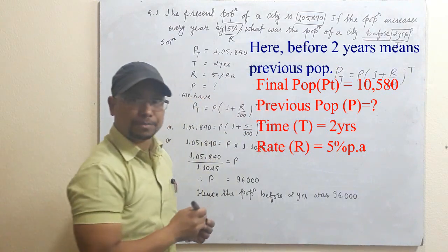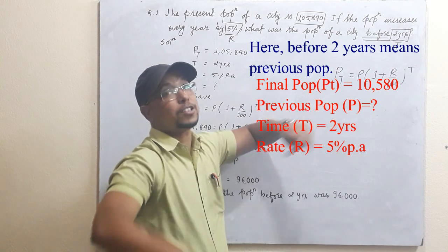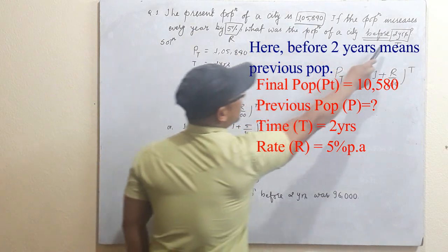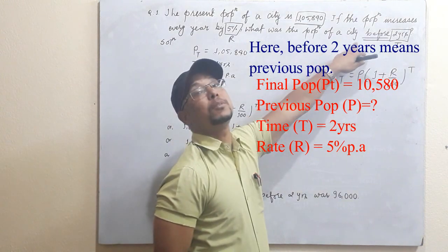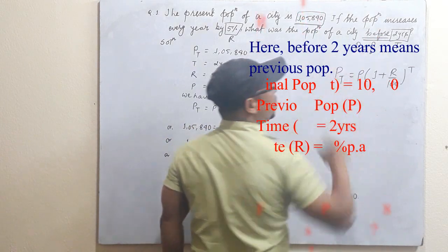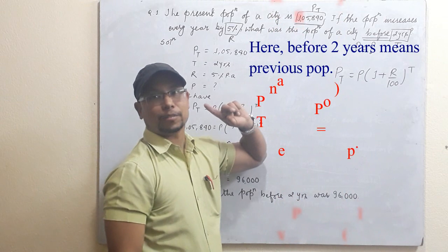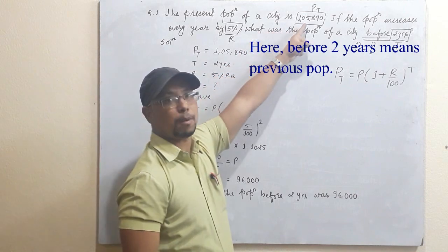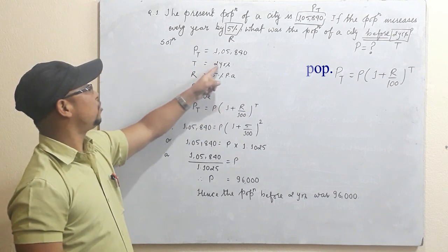Here P is the previous population and PT is the future population. Now let's identify which one is P and which one is PT. The present population is given, and we are asked for the population before two years — that means before two years is the previous one, so that is P. The present population is obviously PT because it is the final one.